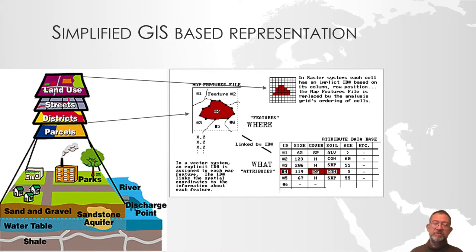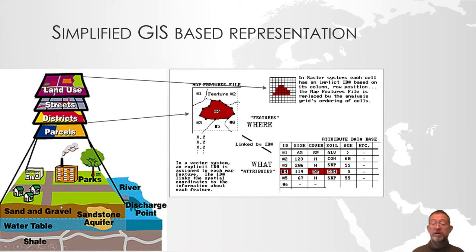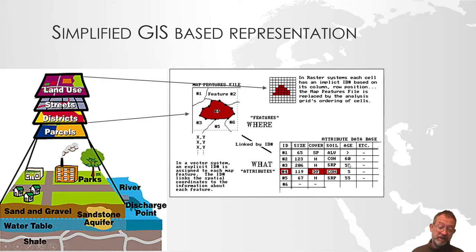If we remember back to another video, we talked about how geodata is represented. There are two types of data: raster data and vector data. The way that we represent reality, or our world of discourse, we do it by splitting the world into layers, and then each of these layers has some spatial data and some attribute data describing it.